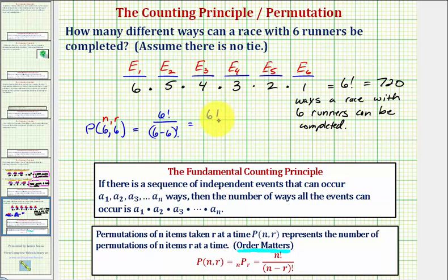Zero factorial is just one, so this is six factorial, which we saw above is 720.